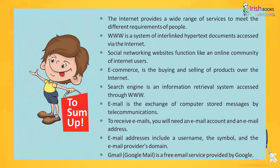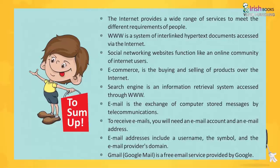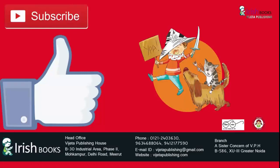To sum up: The Internet provides a wide range of services to meet the different requirements of people. The WWW is a system of interlinked hypertext documents accessed via the Internet. Social networking websites function like an online community of Internet users. E-commerce is the buying and selling of products over the Internet. A search engine is an information retrieval system accessed through the WWW. Email is the exchange of computer-stored messages by telecommunications. To receive emails, you need an email account and address — email addresses include a username, the @ symbol, and the email provider's domain. Gmail (Google Mail) is a free email service provided by Google.